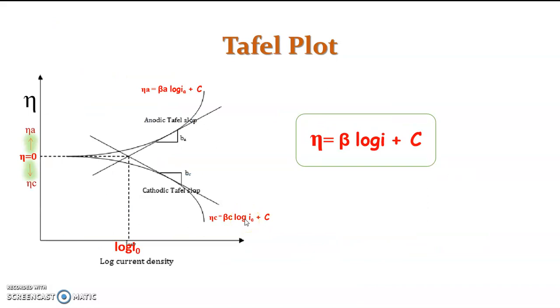Then we are going to Tafel plot. That is, if we are plotting the Tafel equation, the plot will be like this. I am taking η versus log current density, overvoltage versus current density. And in the middle part, I am taking η as 0.